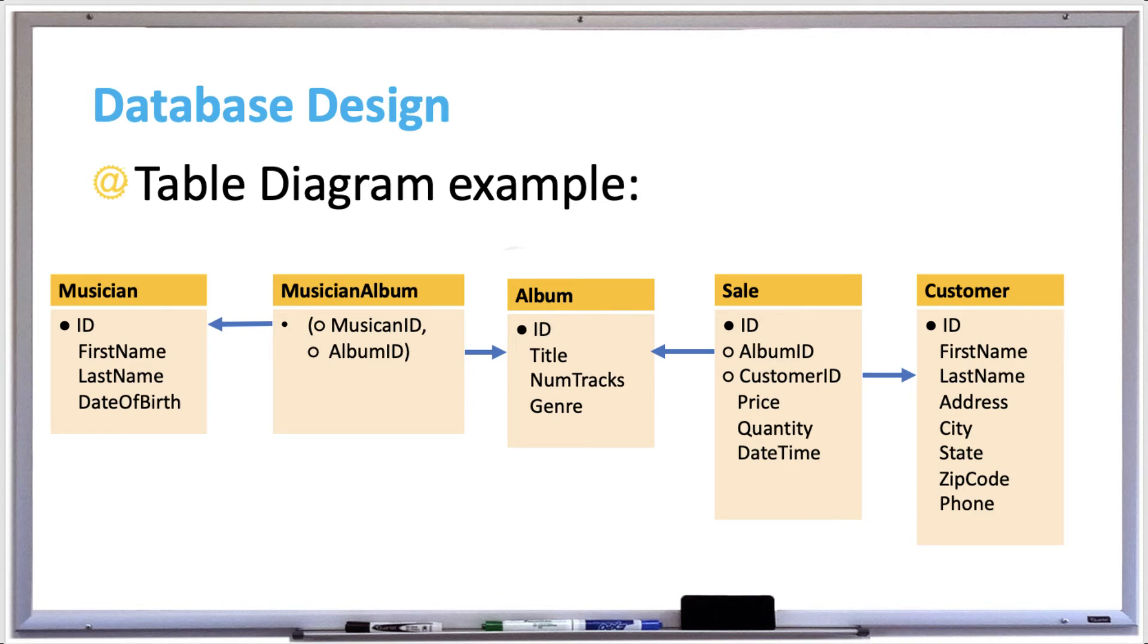And then we added a new table called musician-album, which ties together the musician and album table. So the ID of musician is linked up to the musician ID of musician-album, and the album ID ties to the ID of the album table. And then in the sale table, we also added an album ID and customer ID fields as new columns. And album ID ties to the ID of album, whereas customer ID ties to the ID of customer.